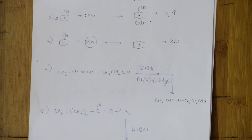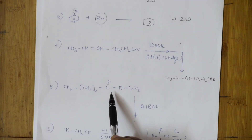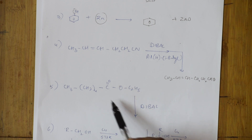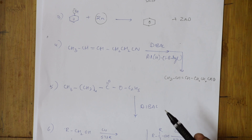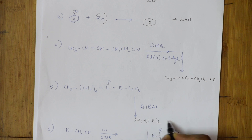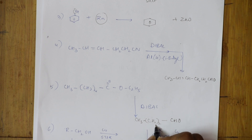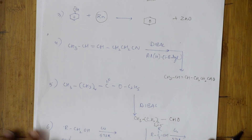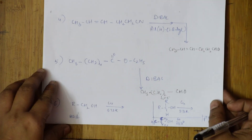DIBAL also reduces esters. When you have an ester group, DIBAL converts it into an aldehyde. You write CH₃CH₂ with the ester group converted to CHO — keeping the carbon chain intact but replacing the ester with an aldehyde. DIBAL converts esters to aldehydes.